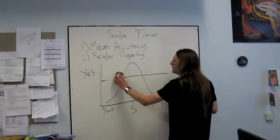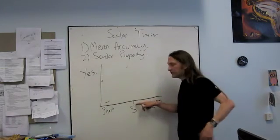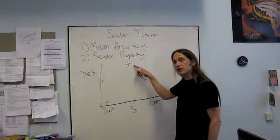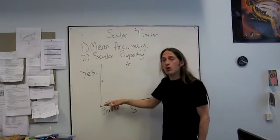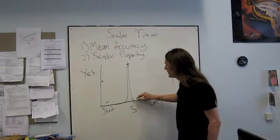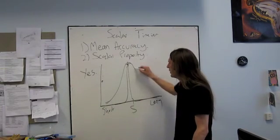If they were absolutely perfect at the task, they would only ever say yes when you give them the standard duration as a comparison. And they'd say no all of the times. So you would get essentially this. So normal data looks something like this.